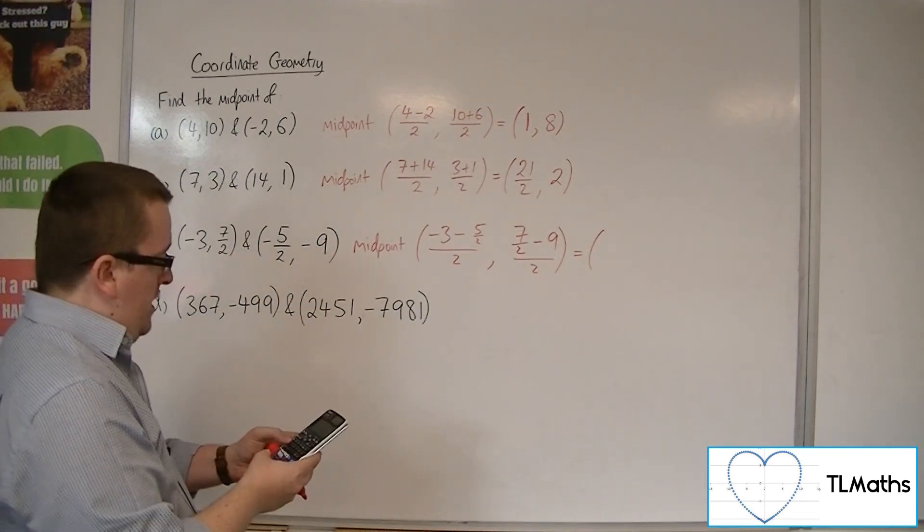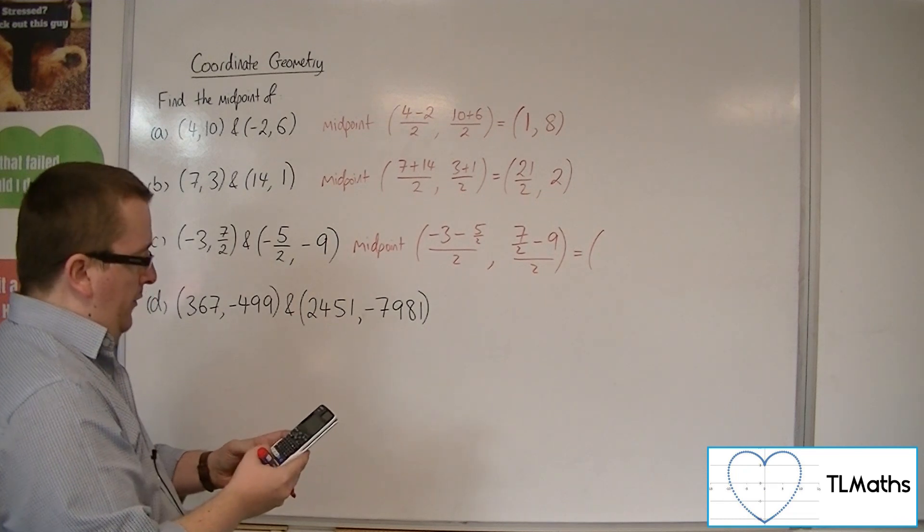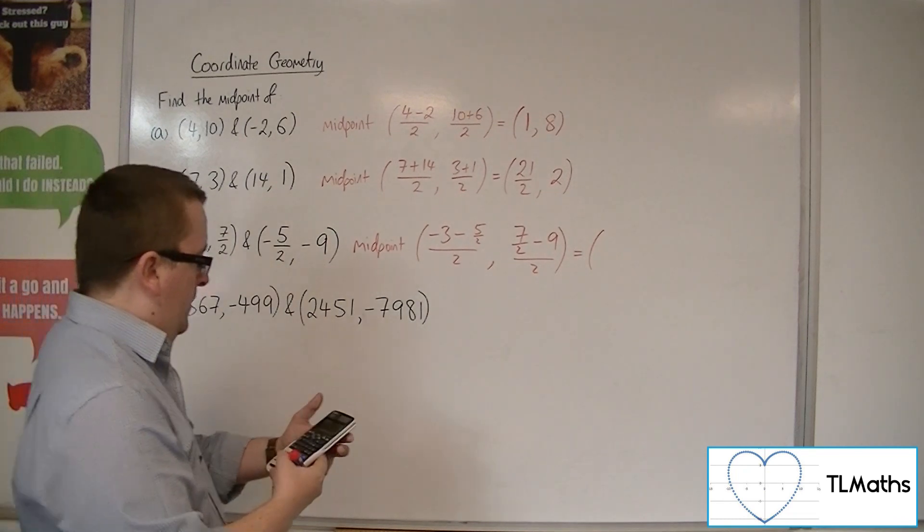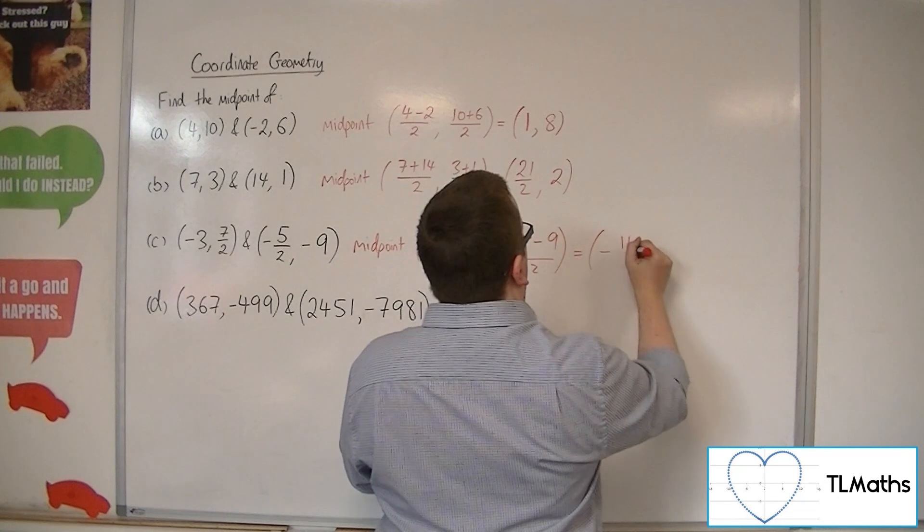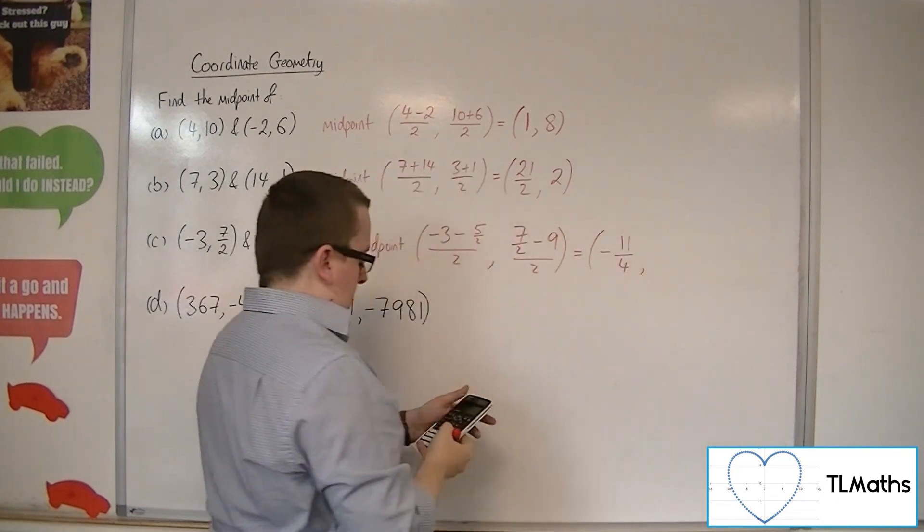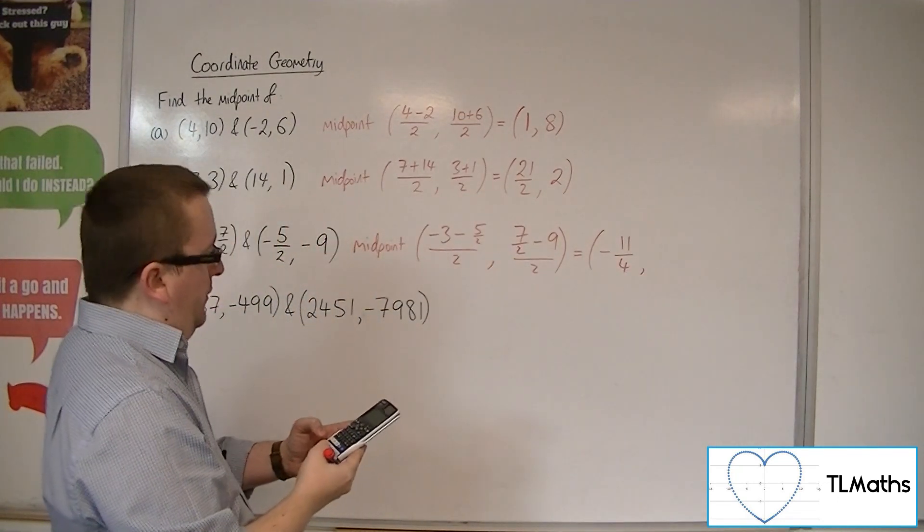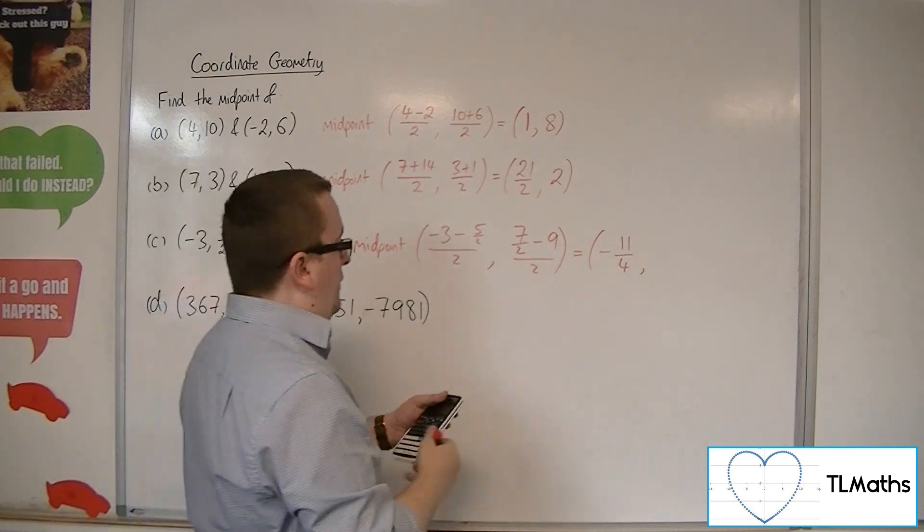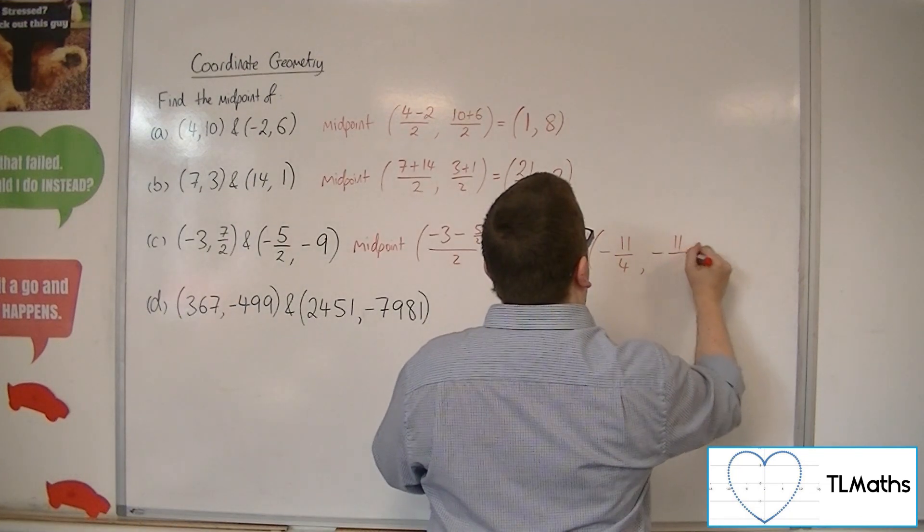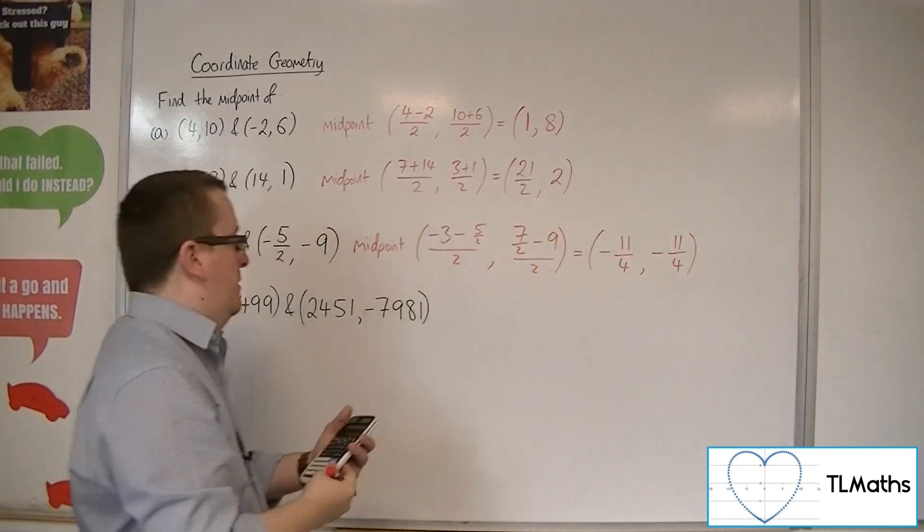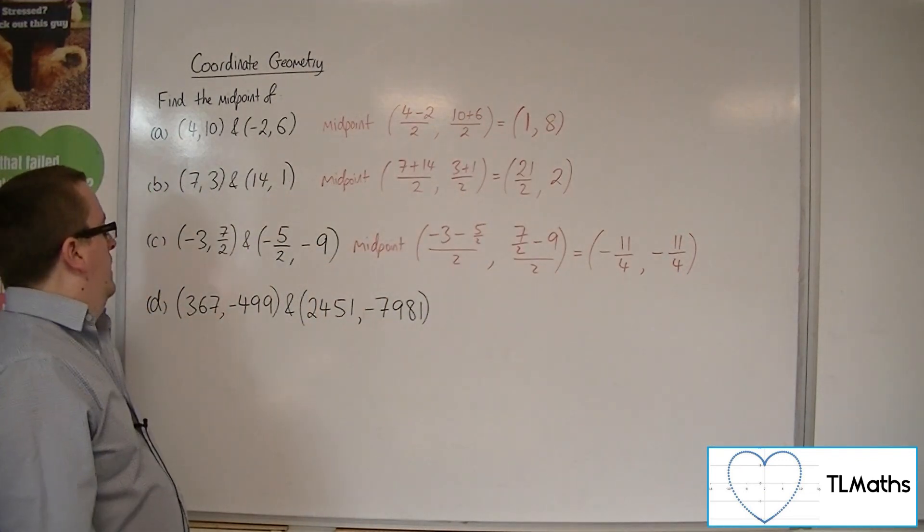We're going to have minus 3, take away 5 halves, over 2. And that's minus 11 quarters. And we have 7 halves, take away 9, over 2. And that's minus 11 quarters. So they both give the same.